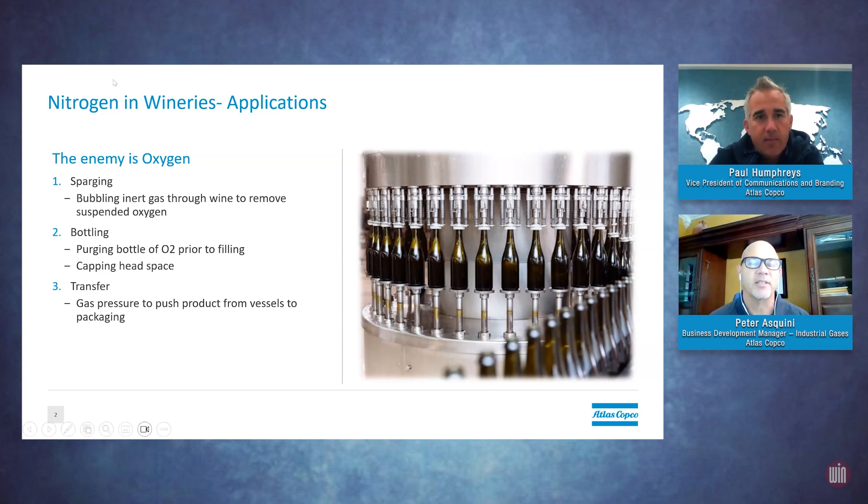Talk to us about some of the applications for nitrogen within wineries and vineyards. Certainly. The key here is we're trying to eliminate oxygen in many different processes in winemaking. Sparging, bottling, and transferring are probably the three major applications we're using nitrogen or an inert gas for. Sparging is bubbling inert gas through the wine to get rid of suspended oxygen. Bottling evacuates the 21% oxygen in the atmosphere inside the bottle. In the transfer process, we're pushing wine from vessel to vessel or vessel to packaging.